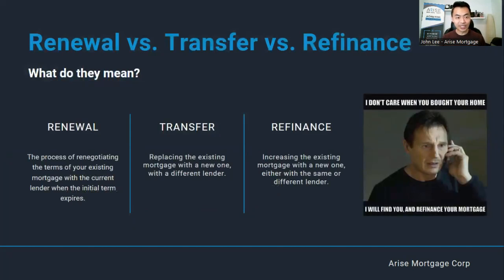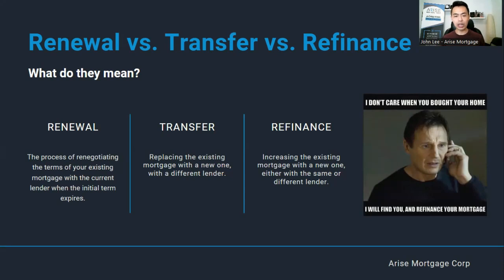There are a lot of different terminologies, so let's go over three big terms. Number one is renewal — the process of renegotiating the terms of your existing mortgage with the current lender when the initial term expires, keeping the same mortgage amount and lender. A transfer is very similar, but you're taking the mortgage and bringing it to another lender, most likely because that lender is offering better terms and rates. Refinance is very different — you're actually increasing the existing mortgage and creating a new mortgage with different rates and different amortization, either with the same or a different lender.